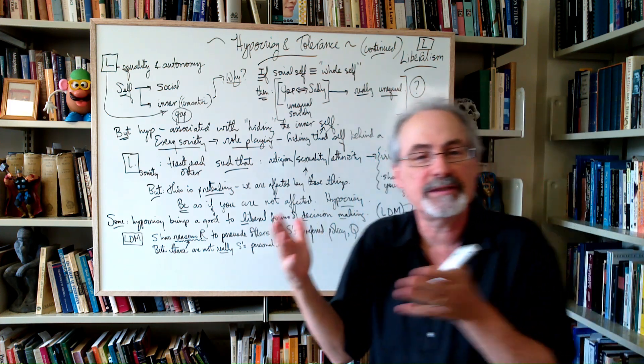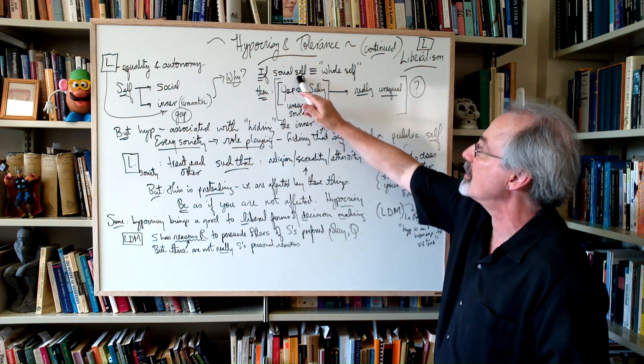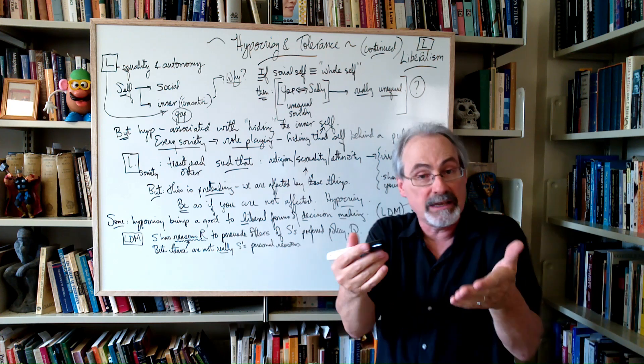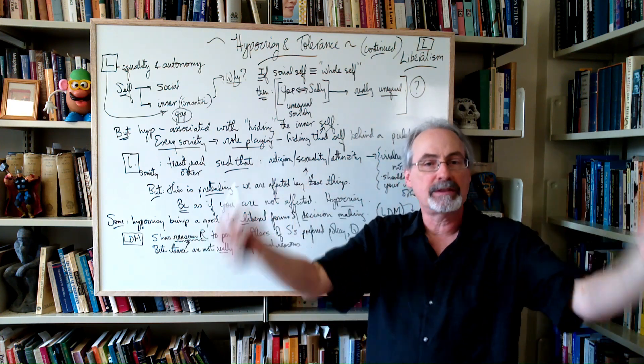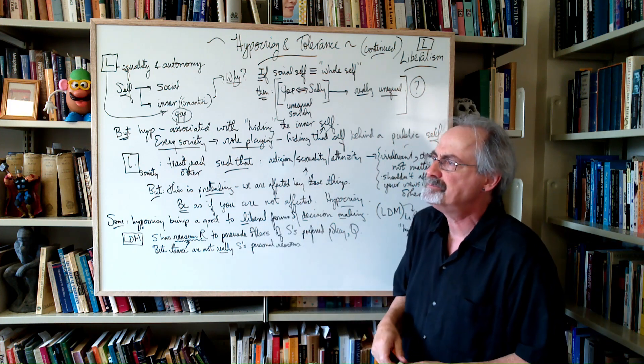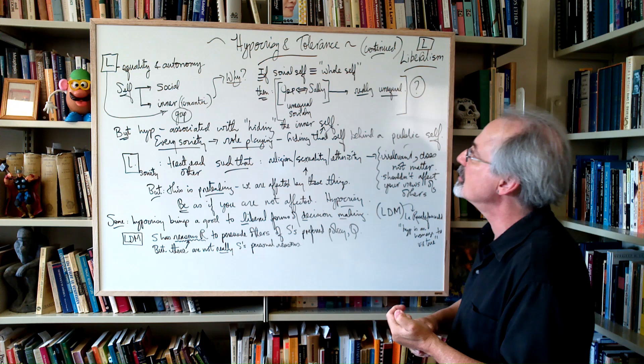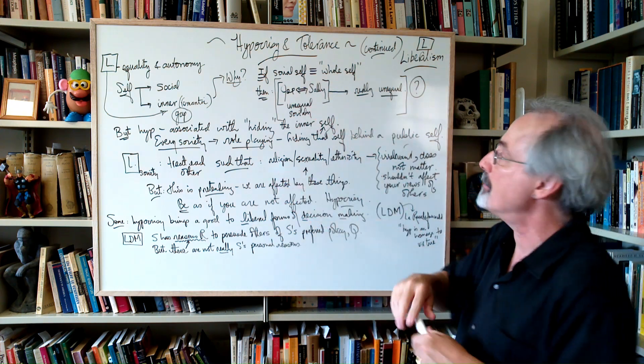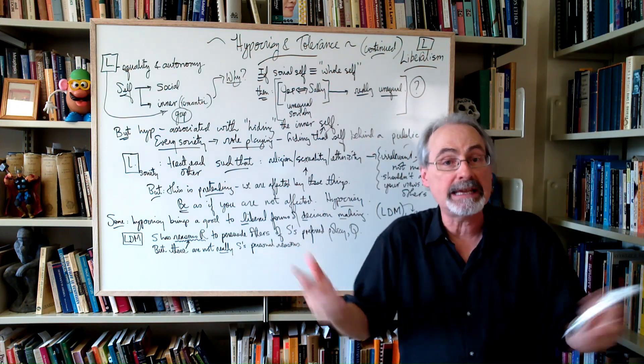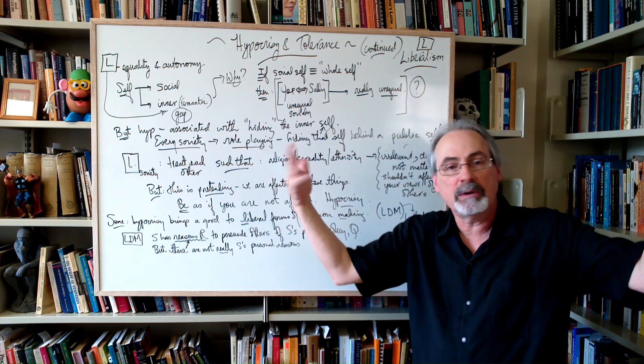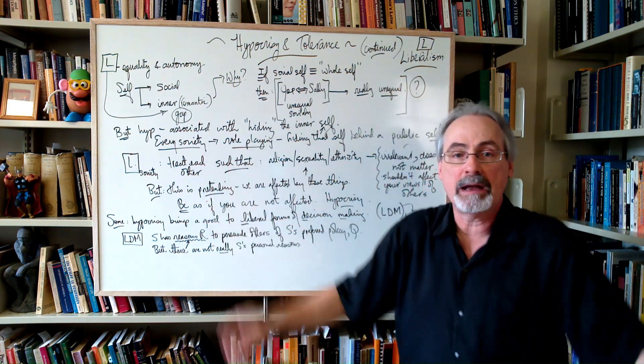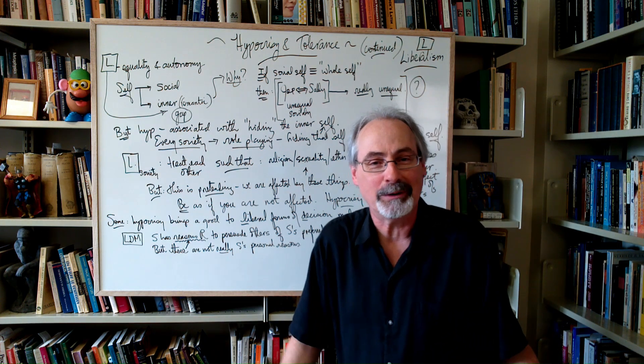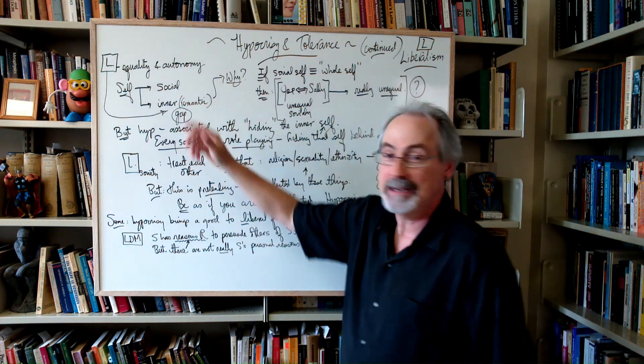If you think of the self, that this social self, let's call it that, if that's the whole self, if me is just all these relations, and being you is all the relations that we can unpack that contain you, if that's the whole story, think about a possible result. If the social self is the whole self, then, this is an example, suppose you have two people, Joe and Sally, that are unequal socially. Like once you unpack all their social relations, they're unequal.